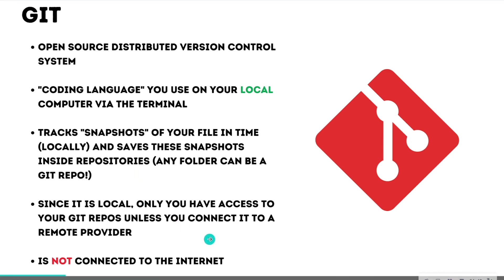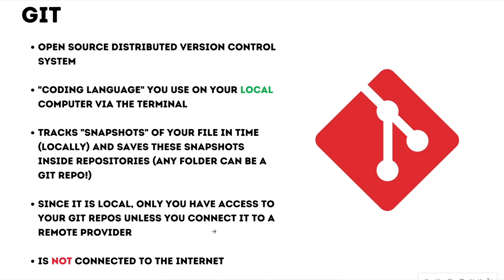Since Git is local, you do not have to access Git repos on the internet. If you want to individually work with Git — just making sure you have version control and tracking on your own computer — you can definitely work with Git independent of GitHub. GitHub is considered a remote provider where you can push your local Git repositories to the internet, and once it's on the internet, other people can collaborate with you. Git itself is independent of the internet.